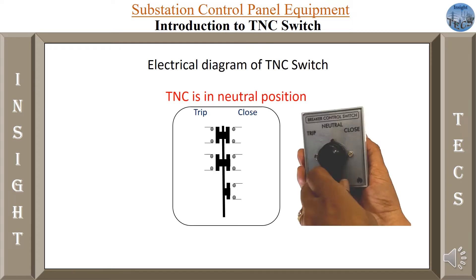As shown over here, this is a TNC switch — how it looks inside the panel, inside the control room. All these contacts are NO contacts, that is normally open. Whenever we move the handle towards either trip or close, these contacts will get closed. One important thing to understand is that in normal condition, the TNC switch is always in the neutral position.